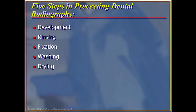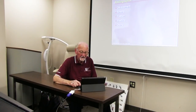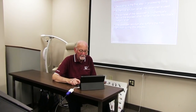There are five steps in processing dental radiographs. First is development, then rinsing, then fixation, then washing, and then drying. Each one of these steps is very important in the effectiveness of processing the film.